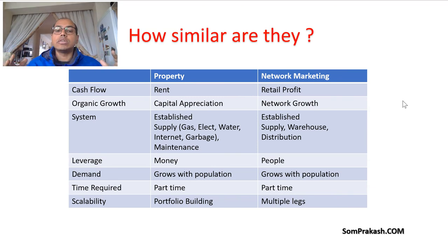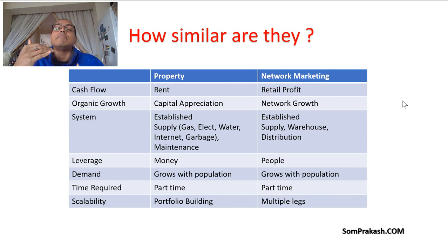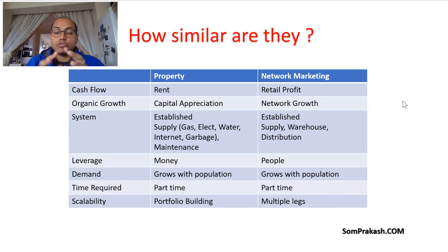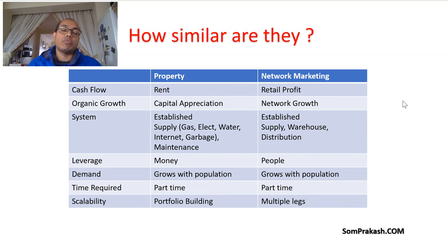In network marketing, the leverage is other people's time. You're not employing anyone — everyone is an independent business owner. When you build an organization, you have independent people in your network who are working for their own future and their own security. When someone in your organization makes income, you also make some income, as long as your business is bigger than your downlines. This is different from an illegal pyramid where one person does all the volume and the upline takes all the profit.